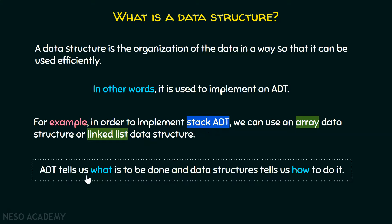ADT tells us what is to be done and data structures tells us how to do it. So data structures cares about how, not what. ADT just gives us the blueprint, while data structures gives us the implementation.